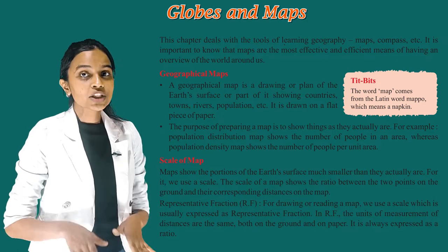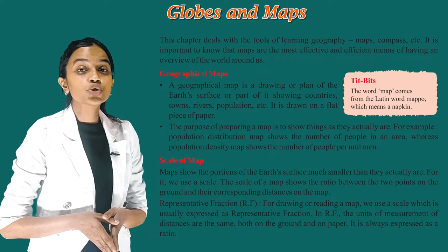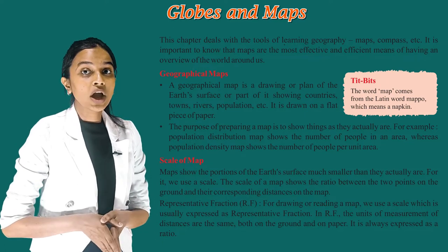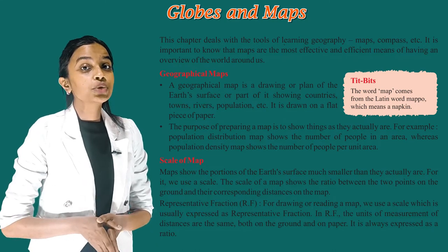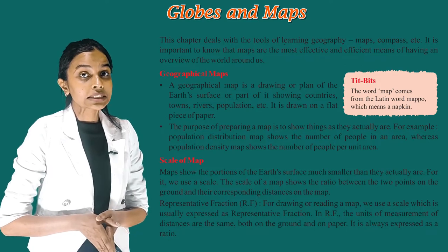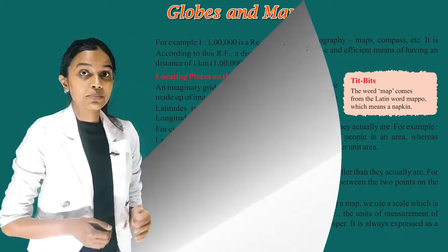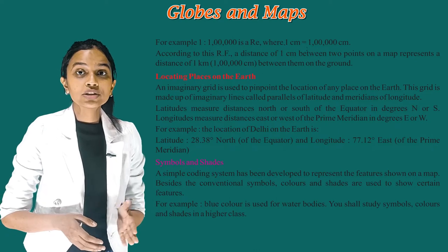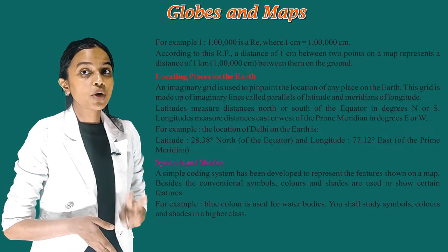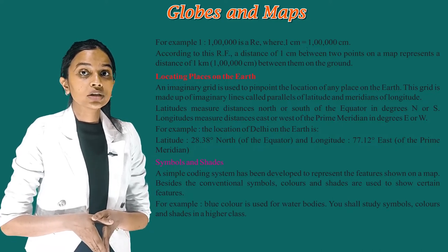Map shows the portions of the earth's surface much smaller than they actually are. For this, we use a scale. The scale of a map shows the ratio between two points on the ground and their corresponding distances on the map. For drawing or reading a map, we use a scale which is usually expressed as a Representative Fraction, or RF. In RF, the units of measurement of distances are the same both on the ground and on paper, and it is always expressed as a ratio. For example, 1:1,00,000 is an RF where 1 centimetre equals 1 lakh centimetres. According to this RF, a distance of 1 centimetre between two points on a map represents a distance of 1 kilometre, i.e., 1 lakh centimetres, between them on the ground.